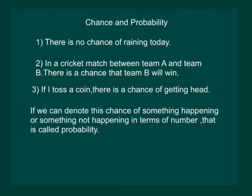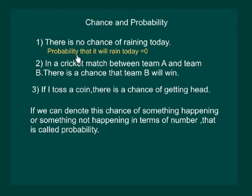Now, if we can denote this chance of something happening or something not happening in terms of numbers, then it is called probability. Let us understand how we can assign numbers to chance. For example, 'there is no chance of raining today' can also be stated as: the probability that it will rain today is zero.